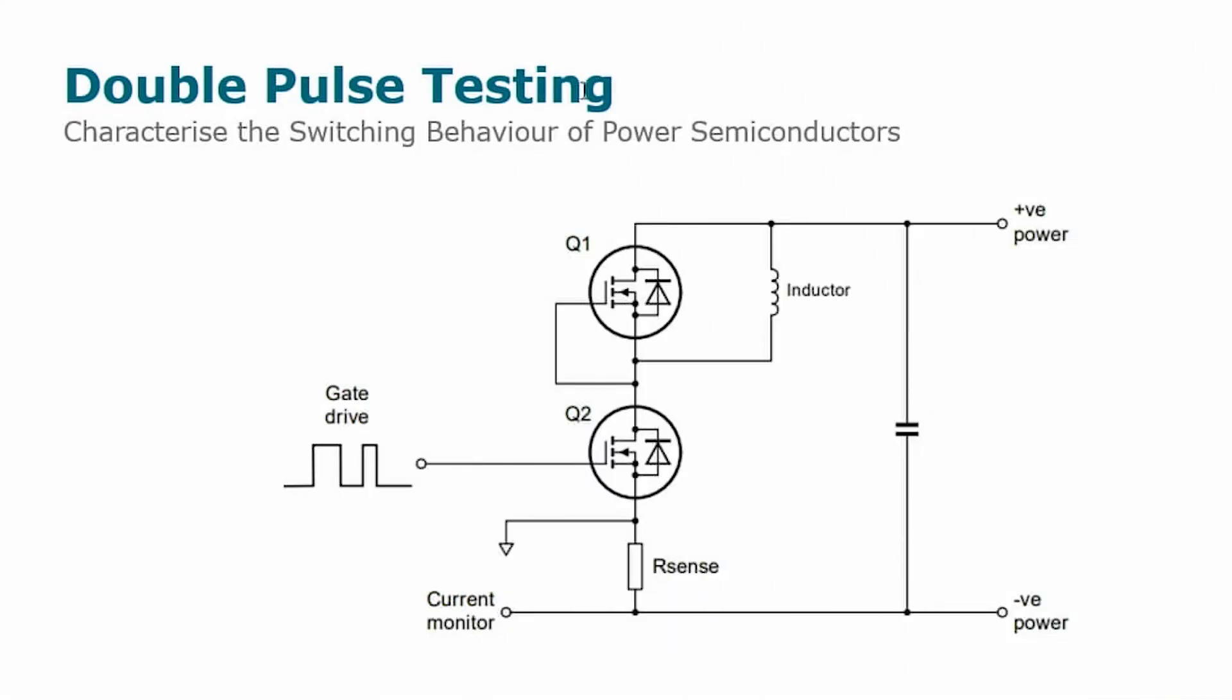We will now consider an industry standard method to characterize the switching behavior of power semiconductors. We refer to that as double pulse testing and it is specifically intended to test device performance in inductive clamp switching applications.